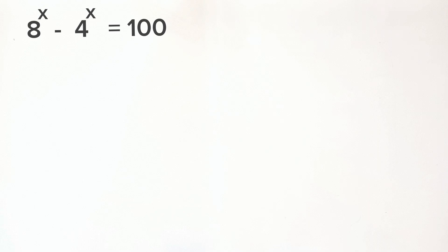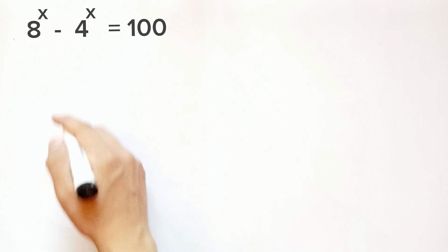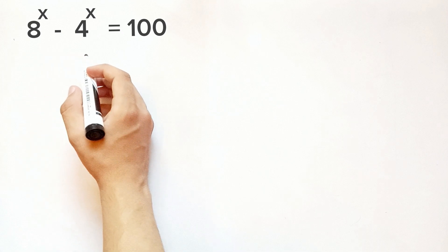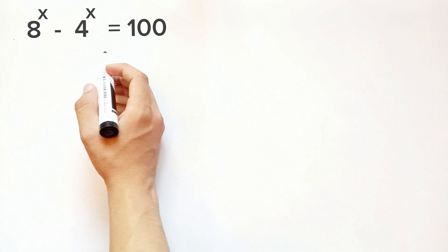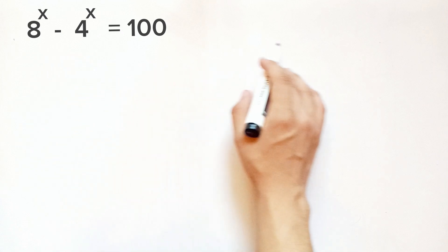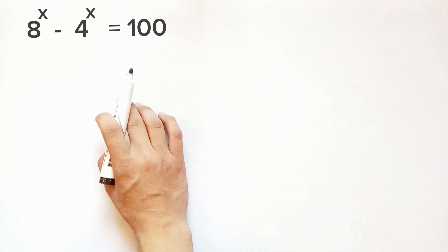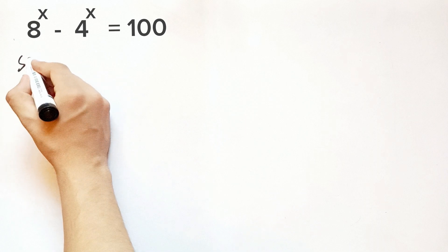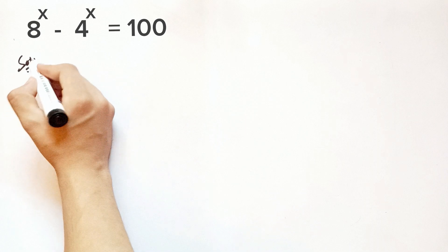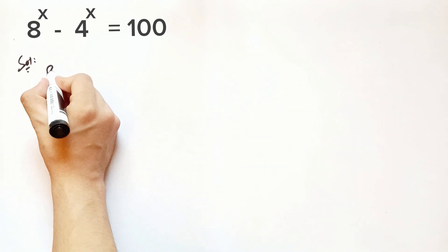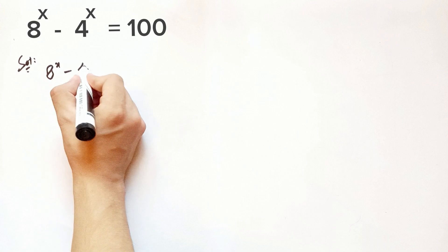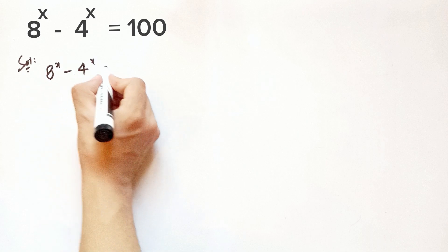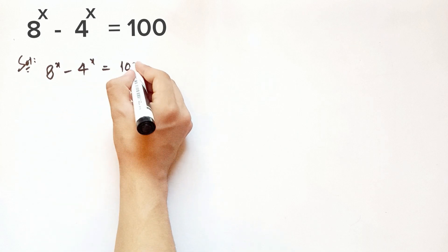Hi everyone. In this video we have to solve the equation 8 to the power x minus 4 to the power x equals 200, and we have to find all the real values of x. So let's get started and find the solution for this equation. We have 8 to the power x minus 4 to the power x equals 200.